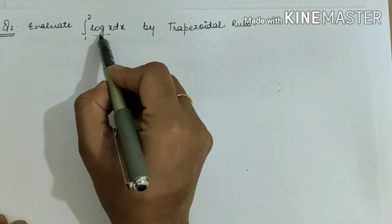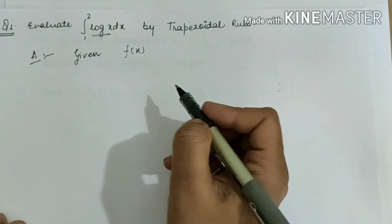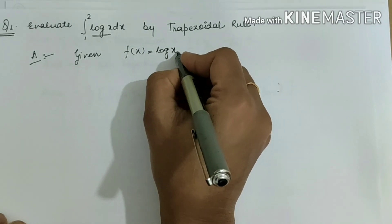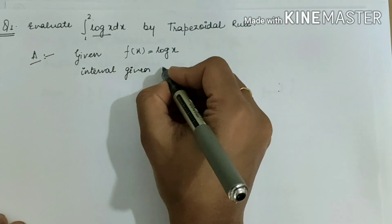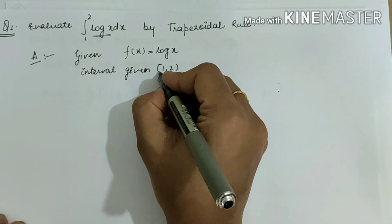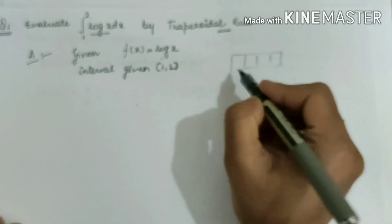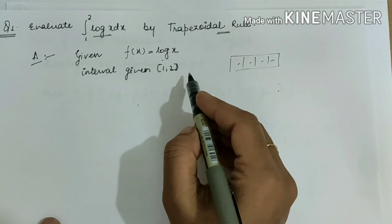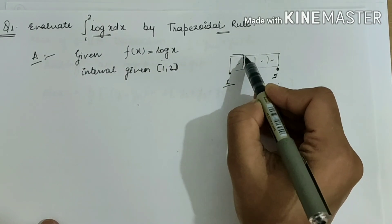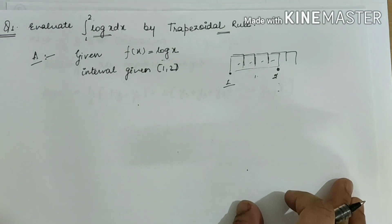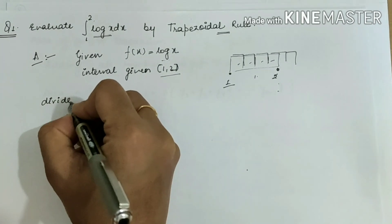Now here is a question: evaluate the integral of log x dx from 1 to 2 by the Trapezoidal Rule. Given: f(x) = log x, and the interval is [1, 2]. First we find the step value h so we can get small sub-areas and add them to get the total area. The interval is 1 to 2, and we divide it into small points x0, x1, x2, x3, with respect to which we find the values of y.